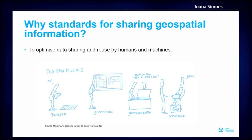Standards are important to share geospatial information in an efficient way — to make sure that systems integrate well with each other and that data is reusable, which is ultimately what we want to achieve. We don't want data to remain in silos, but we want it to be reusable according to the FAIR data principles, which say that information should be findable, accessible, interoperable, and reusable.